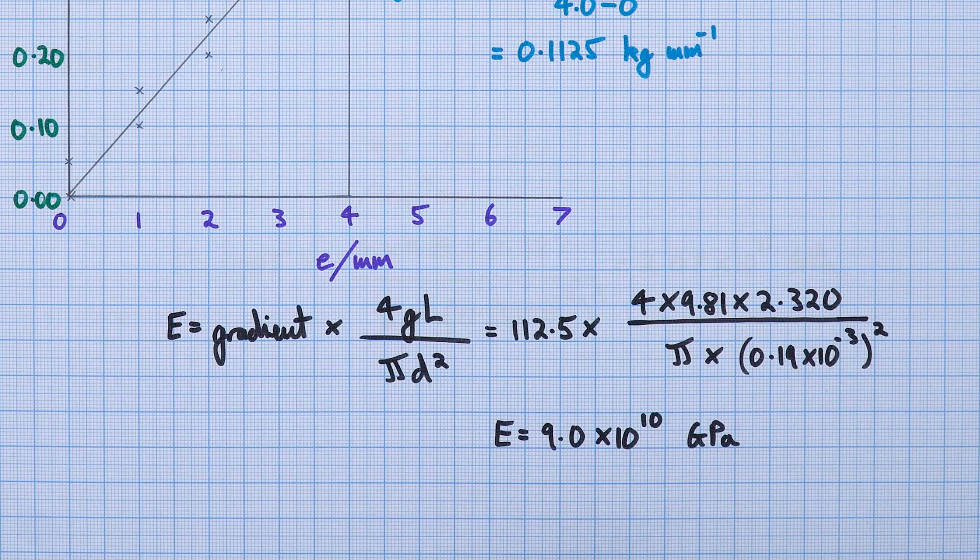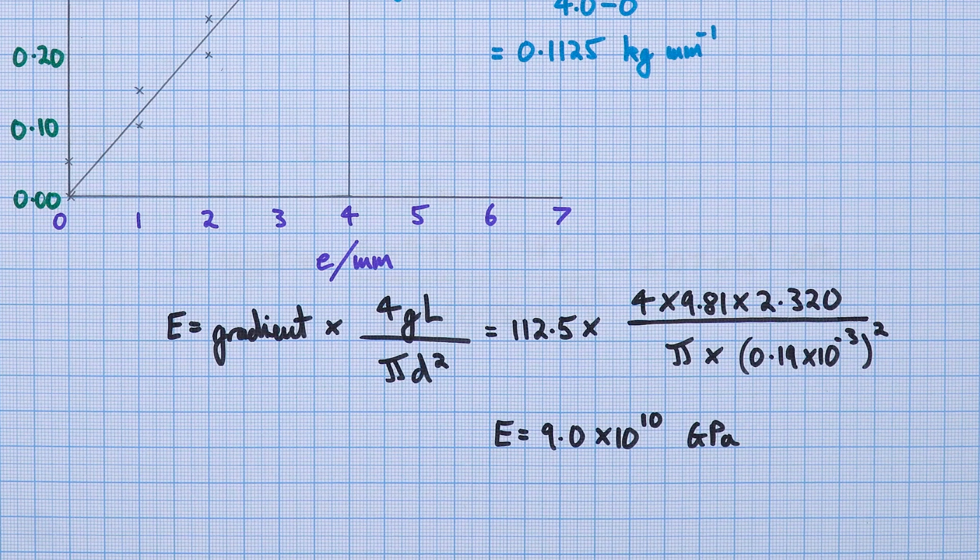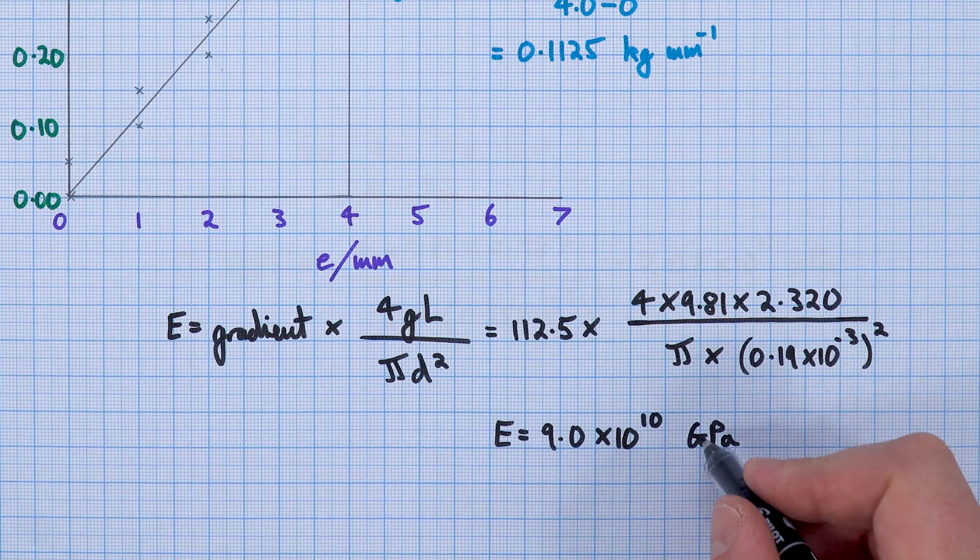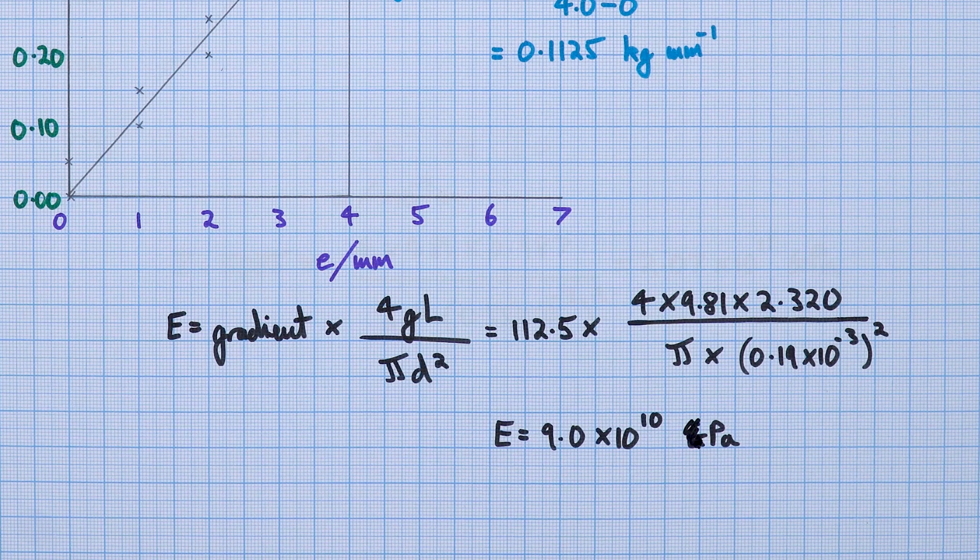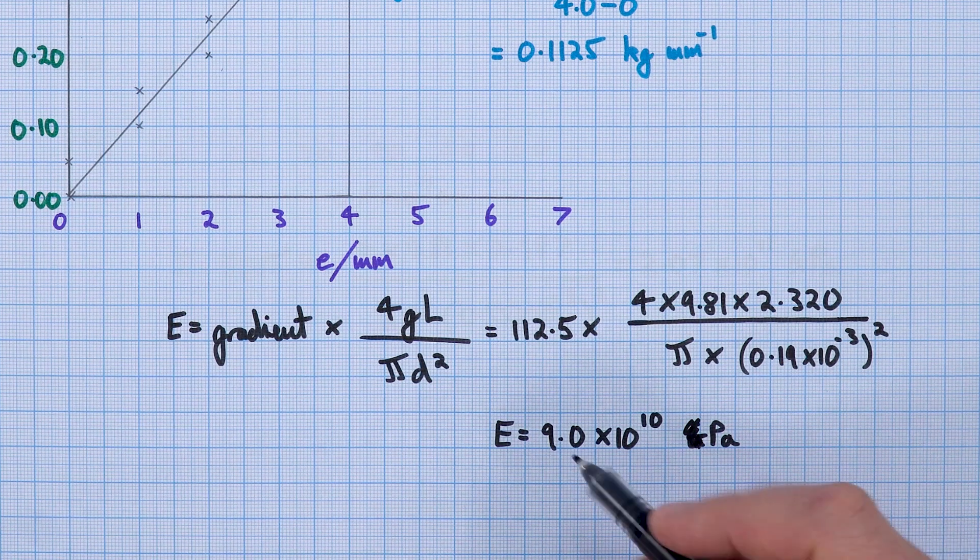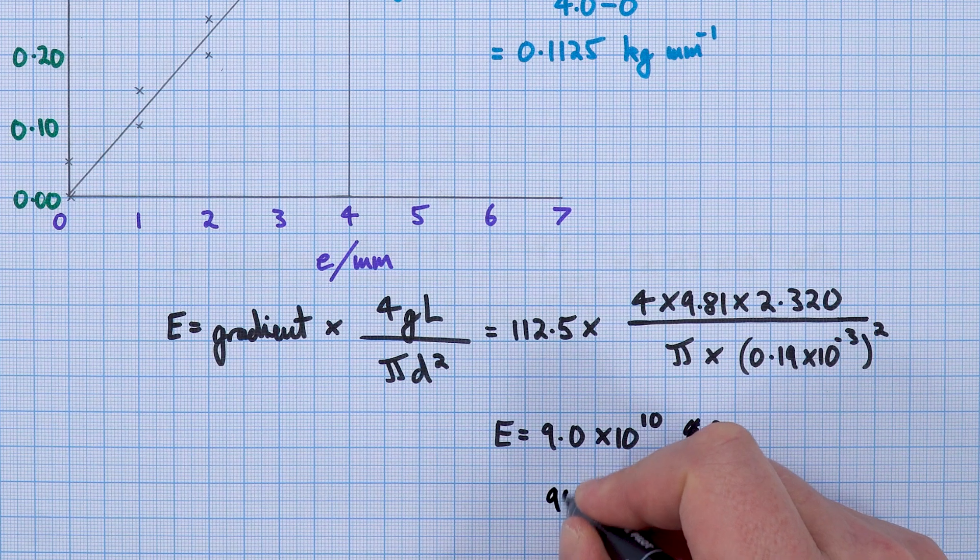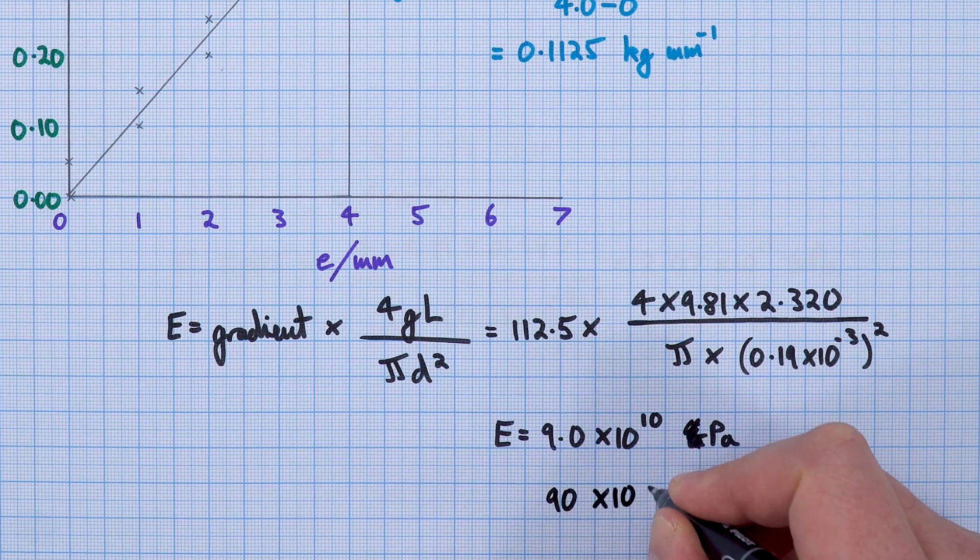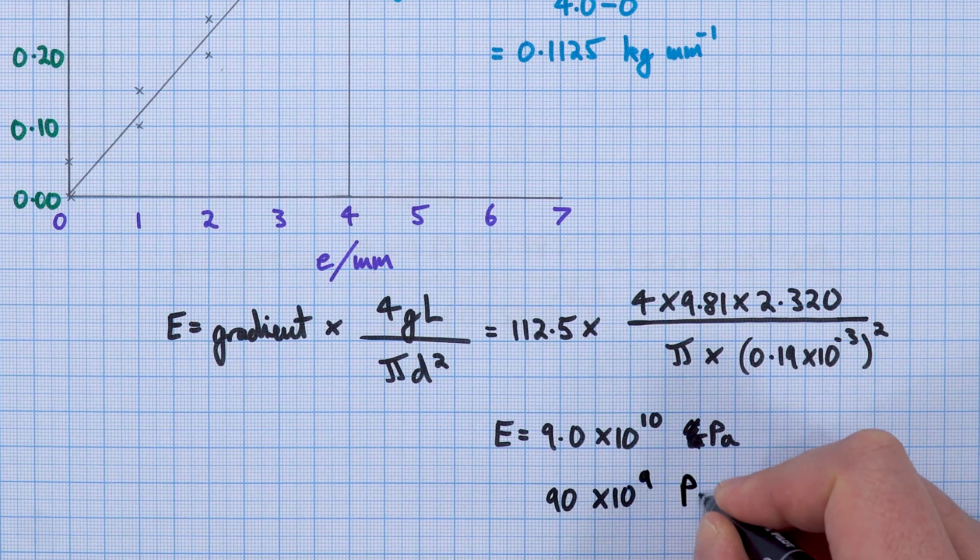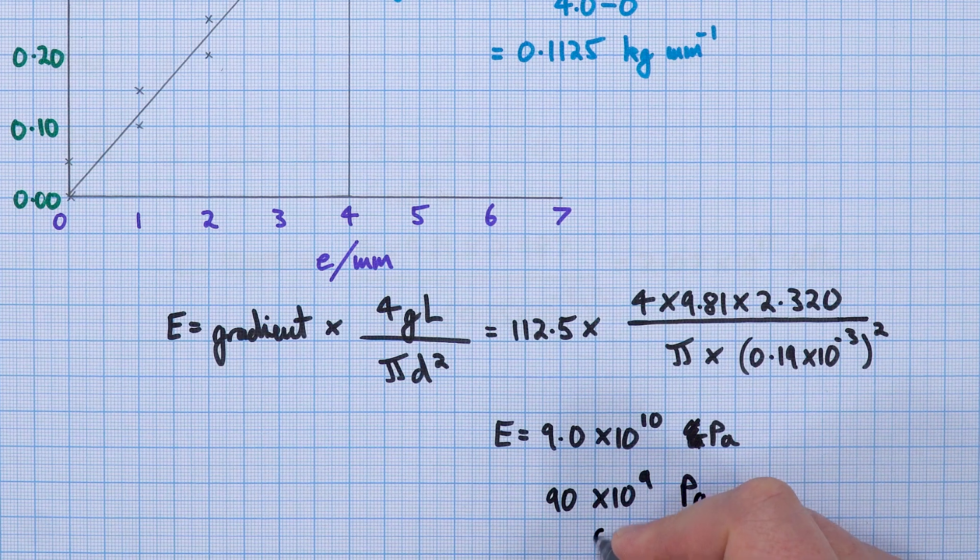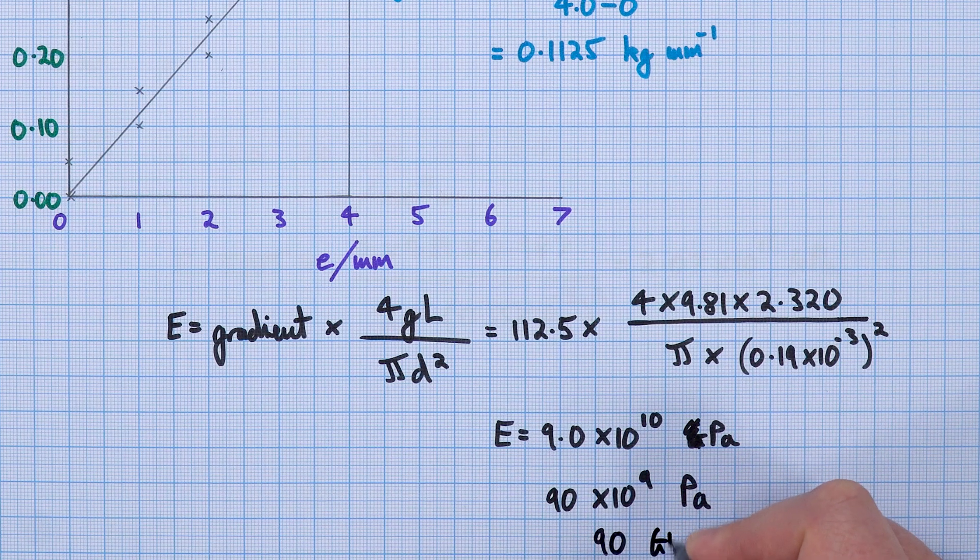I've converted that into meters, and this gives for copper a value of 9.0 times 10 to the 10 pascals. We often give our values for Young modulus in gigapascals, so I could also write this as 90 times 10 to the 9 pascals, which would be 90 gigapascals.